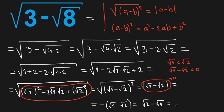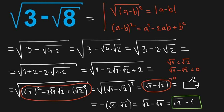This equals square root of 2 minus square root of 1, and since square root of 1 is 1, our final answer is square root of 2 minus 1. Please don't forget to like my video and subscribe to my channel because I'm new on YouTube and I need your support. Thank you for watching and we will see you next time.